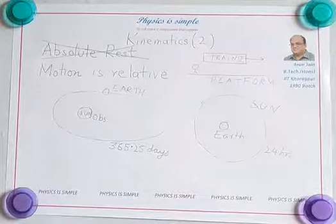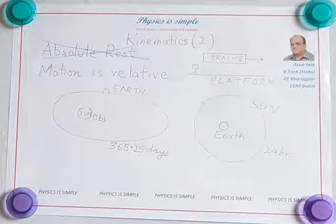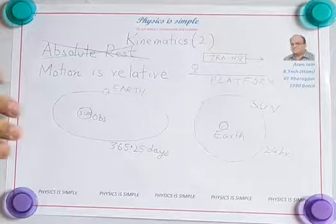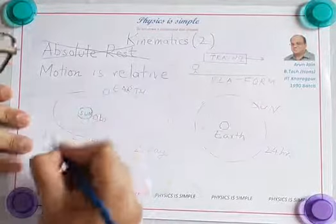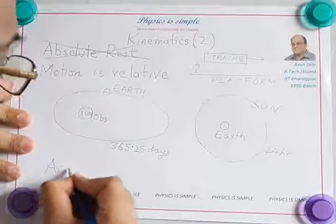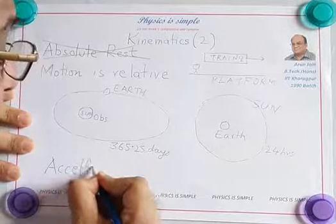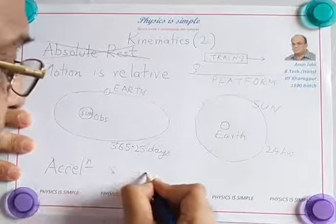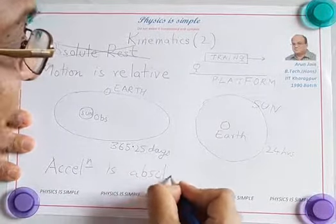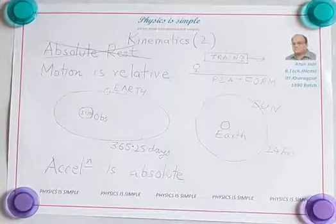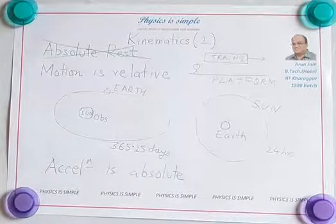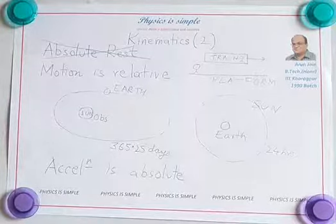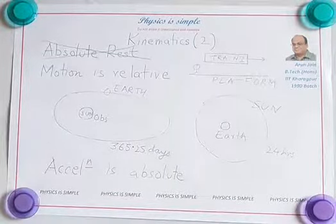So therefore, the train is moving. Remember, motion is relative, but acceleration is absolute. When the train accelerates, the person in the train is going to fall, not the person on the platform. And that tells us the train is moving and not the platform.